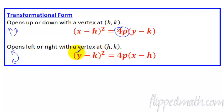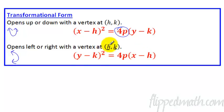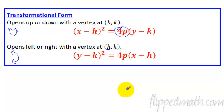Then we go to opening left or right. How do we know? The y is being squared - this is what we're not familiar with. But notice the h still goes with the x, the k still goes with the y, so don't swap those. The h always goes with the x, the k always goes with the y. And again, you have the 4p. If the front is negative, that's how you know if it opens left or down. If the leading coefficient is positive, then it either opens up or opens to the right.